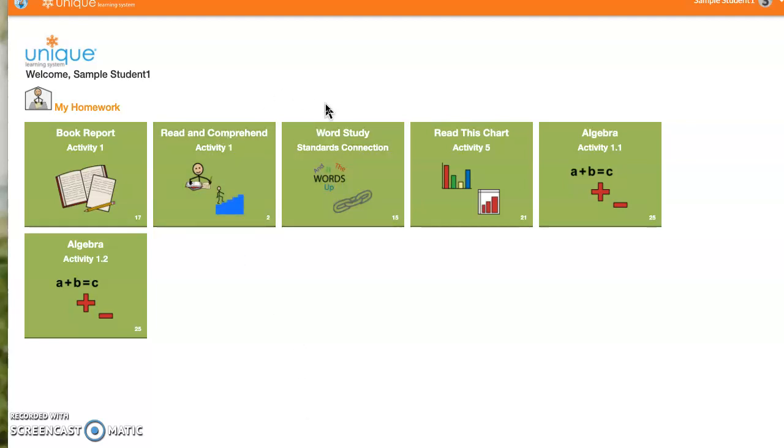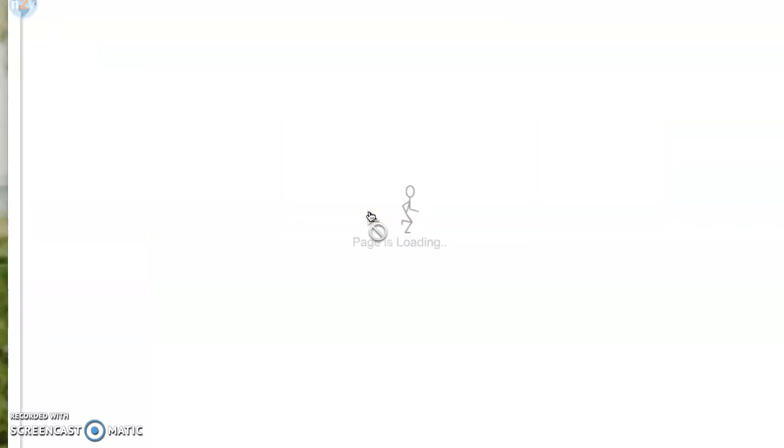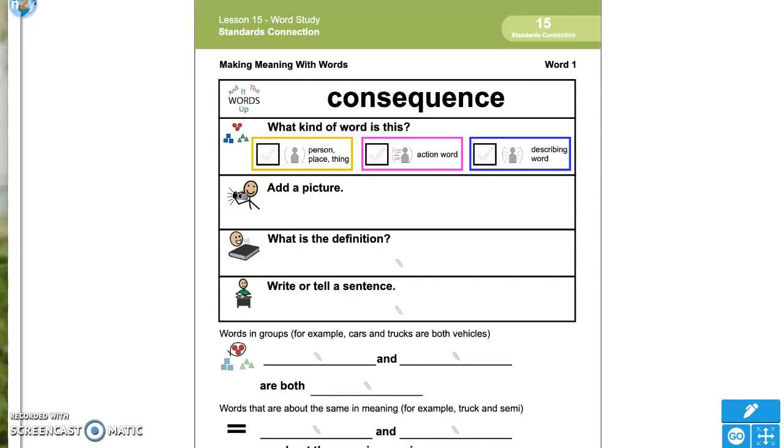Okay, so when we log in you're gonna choose this one, Word Study Standards Connection, it's number 15. Your other ones should have saved, Consequence and Fair, so now we will do Follow.